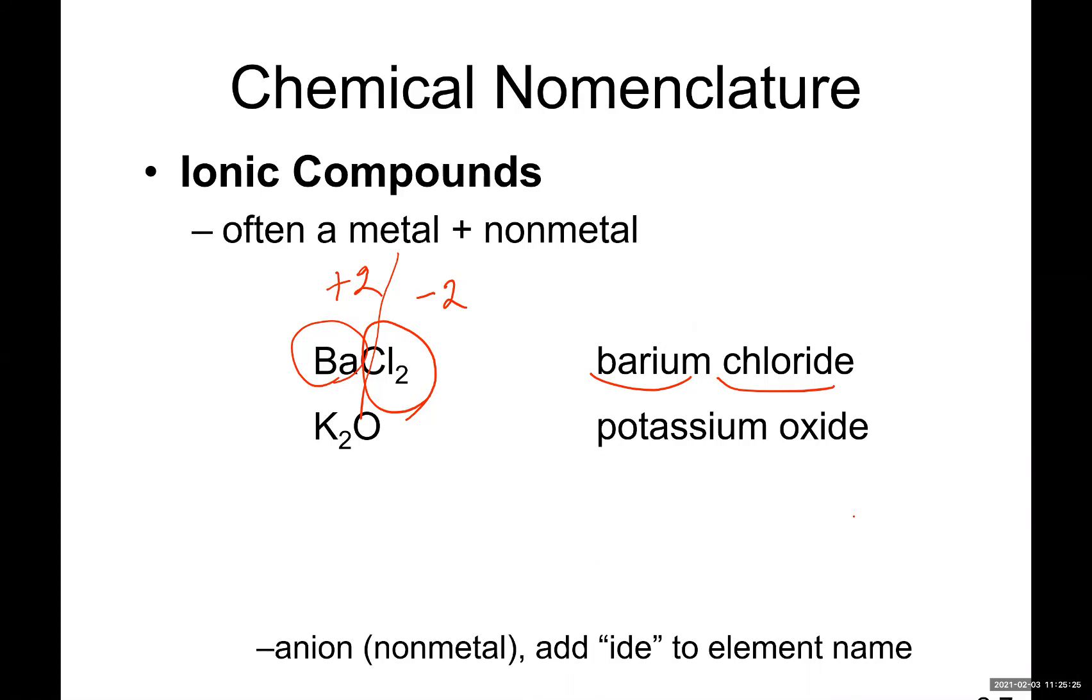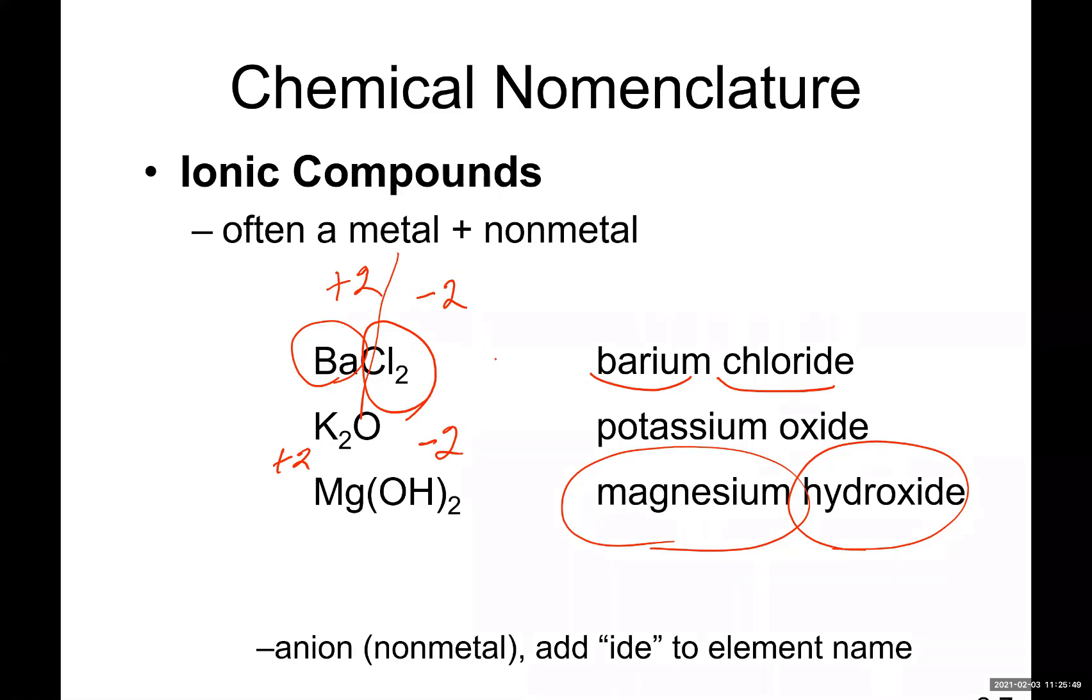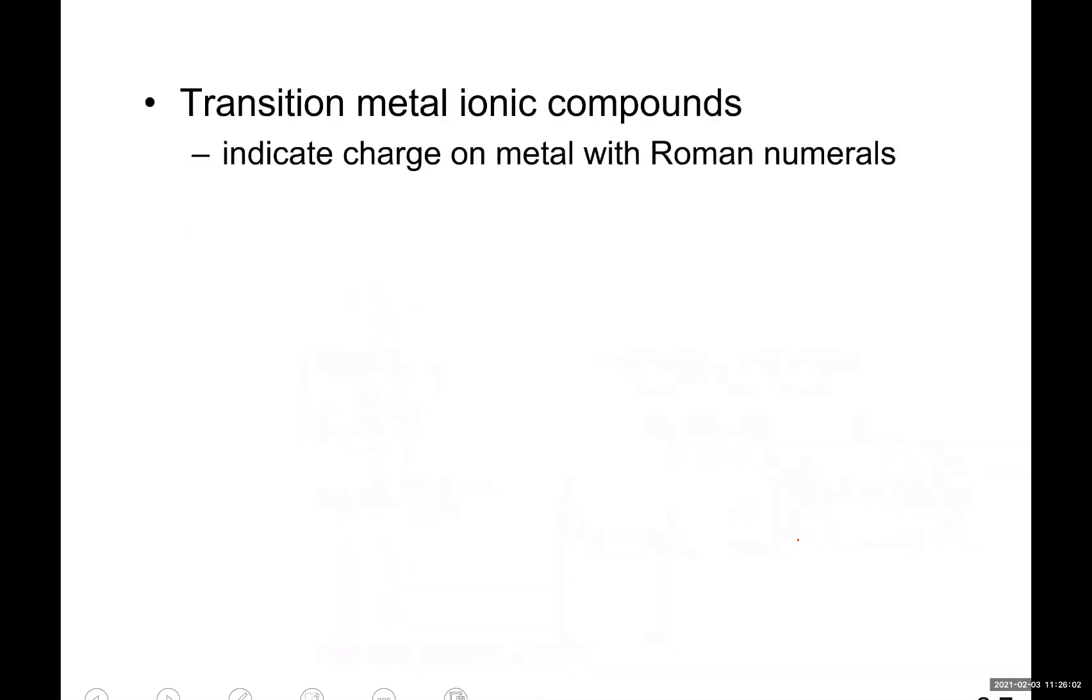So potassium oxide, K2O. And this one, magnesium hydroxide. Metal first, non-metal next. And you read the positively charged first, and then negatively charged. The charge of magnesium plus two, the charge of hydroxide negative two because there are two of them, because there are two times negative one.